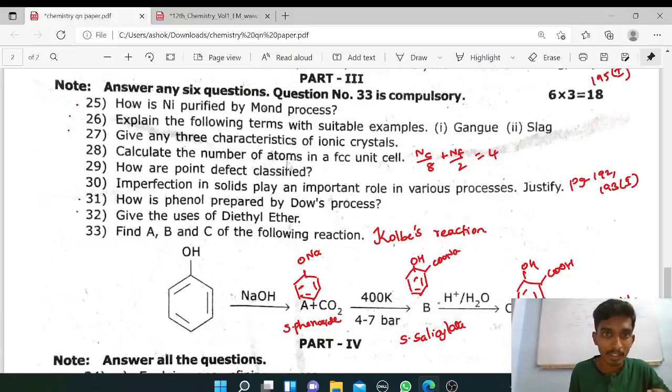Number of atoms in FCC unit cell: Nc by 8, Nf by 2. The diagram is needed. Next, point defect classification. Three are the classification: stoichiometric defect, non-stoichiometric, impurity. Non-stoichiometric has metal excess and metal deficiency. That's all, just the defects heading.